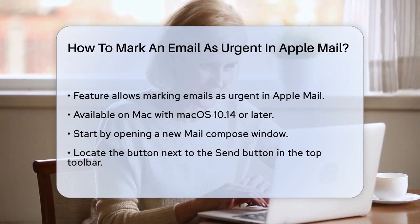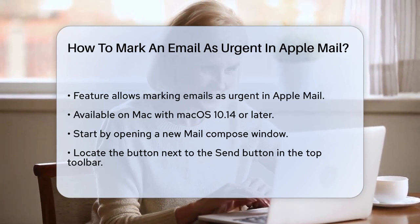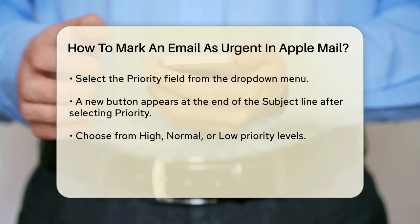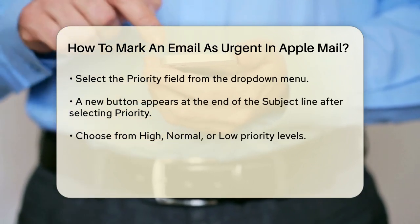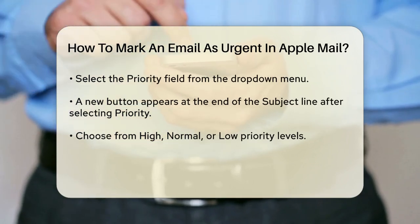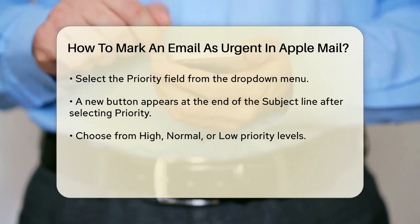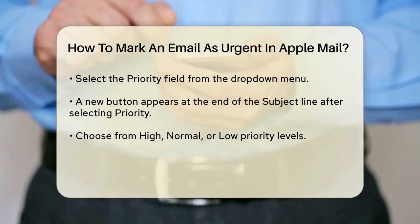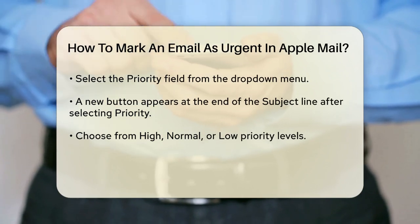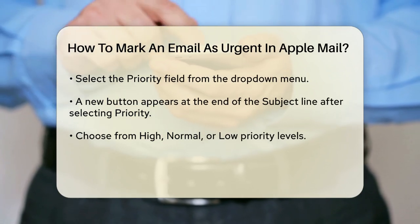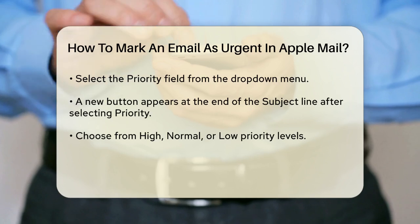To mark an email as urgent, start by opening a new Mail Compose window. Look at the top toolbar — you'll see a button next to the Send button. Click this button and then select the Priority field from the drop-down menu. Once you've selected the Priority field, you'll notice a new button appearing at the end of the subject line. Click this button to set the priority of your email.